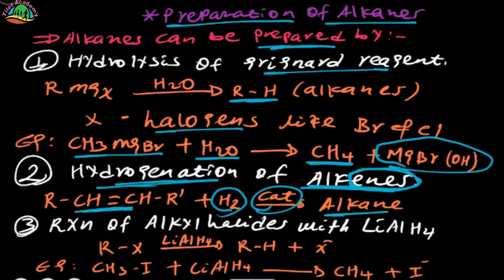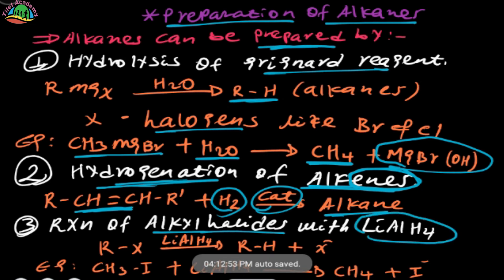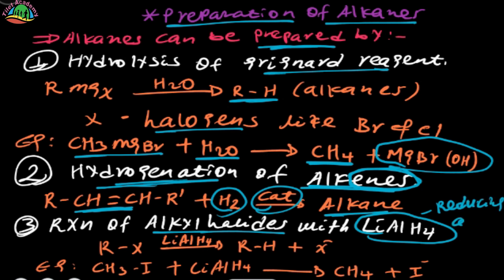Number three: the reaction of alkyl halides with lithium aluminum hydride. Lithium aluminum hydride is a reducing agent. Here, the alkyl halides react with the reducing agent — X represents the halogen group.